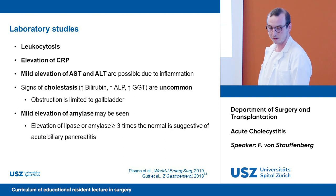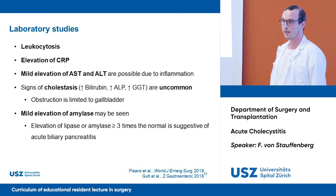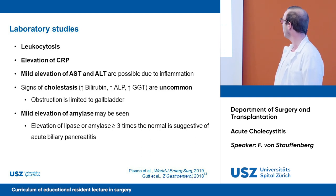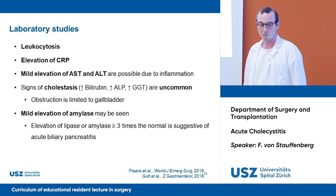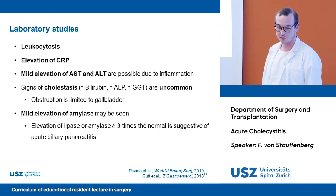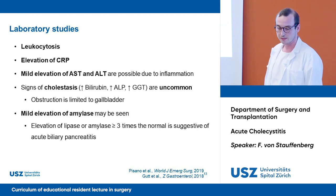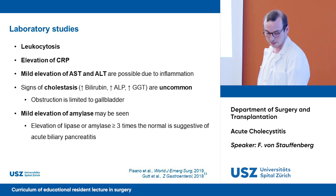In laboratory studies, we will see leukocytosis as well as an elevation of CRP. We might see a mild elevation of AST and ALT due to inflammation of the liver next to the gallbladder, while signs of cholestasis are uncommon because the obstruction is only limited to the cystic duct. We might see a mild elevation of amylase, but be careful if you see elevation of lipase and amylase over three times the norm, which indicates the important differential diagnosis of acute biliary pancreatitis.